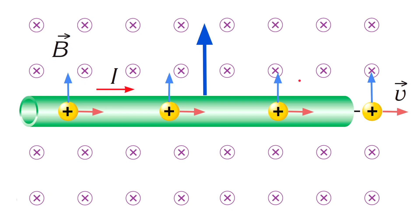It means that if you add all the tiny forces acting on each charged particle at a particular segment of wire, we get the magnetic force acting on a current-carrying wire.